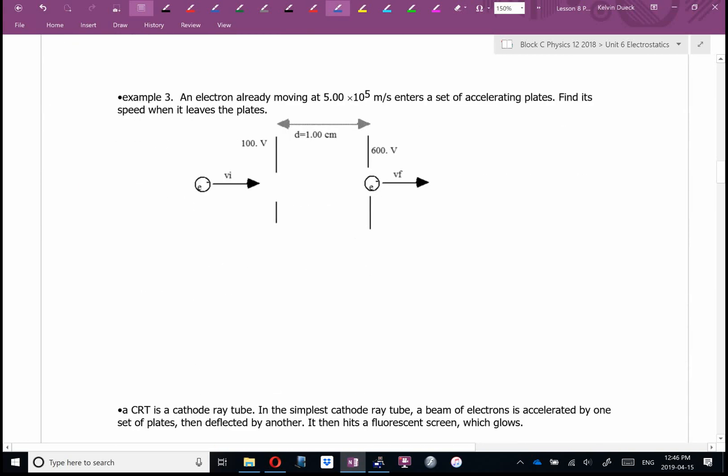Example three is a nice question. An electron already moving at 5 times 10 to the 5th meters per second enters a set of accelerating plates. Find its speed when it leaves the plates. Chloe, what's this question asking me to find? Speed. Is there a change in height? Is there a change in speed? There's not a yucky curvy path, but I think I'm going to solve this with conservation of energy. This one, I'll also show you how we could solve it using force and V final.